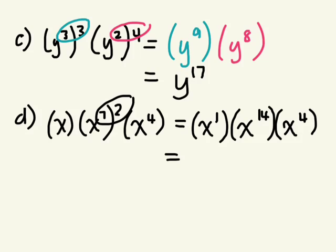Now we're multiplying powers with the same base, so we add all the exponents together: 1 plus 14 plus 4 is 19, giving us x to the power of 19.